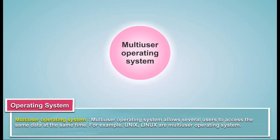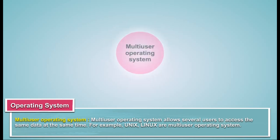Multi User Operating System: A multi user operating system allows several users to access the same data at the same time. For example, Unix and Linux are multi user operating systems.